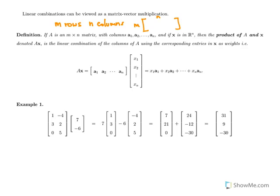So AX can be rewritten: if we express A as its columns — vectors A1 to An — times the vector X with entries X1 to Xn, then this is the linear combination X1·A1 plus X2·A2 all the way to Xn·An.